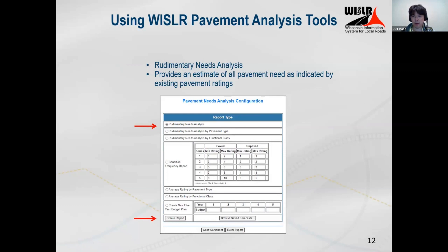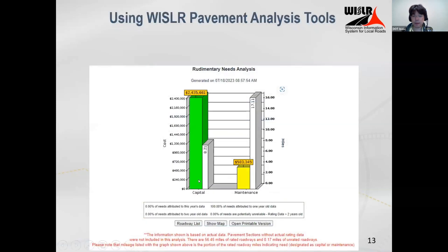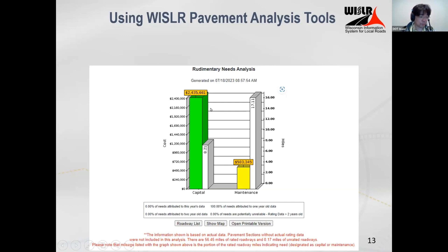These rudimentary needs reports are run based off of an unconstrained budget — pretty much saying if you had all the money in the world to fix all your roads, here's what it would cost. The way to run it is to select 'rudimentary needs analysis' and then click 'create report' at the bottom. You will see a number of graphs.